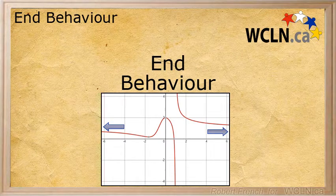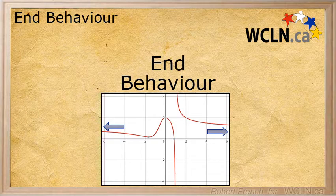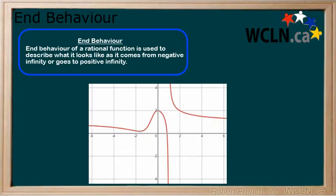In this tutorial we will be learning how to describe the end behavior of a rational function. The end behavior of a rational function is used to describe what the function looks like as it comes from negative infinity and goes to infinity. Remember that the direction of a function is left to right. The start of a function is as it comes from negative infinity and the end is as it approaches infinity.